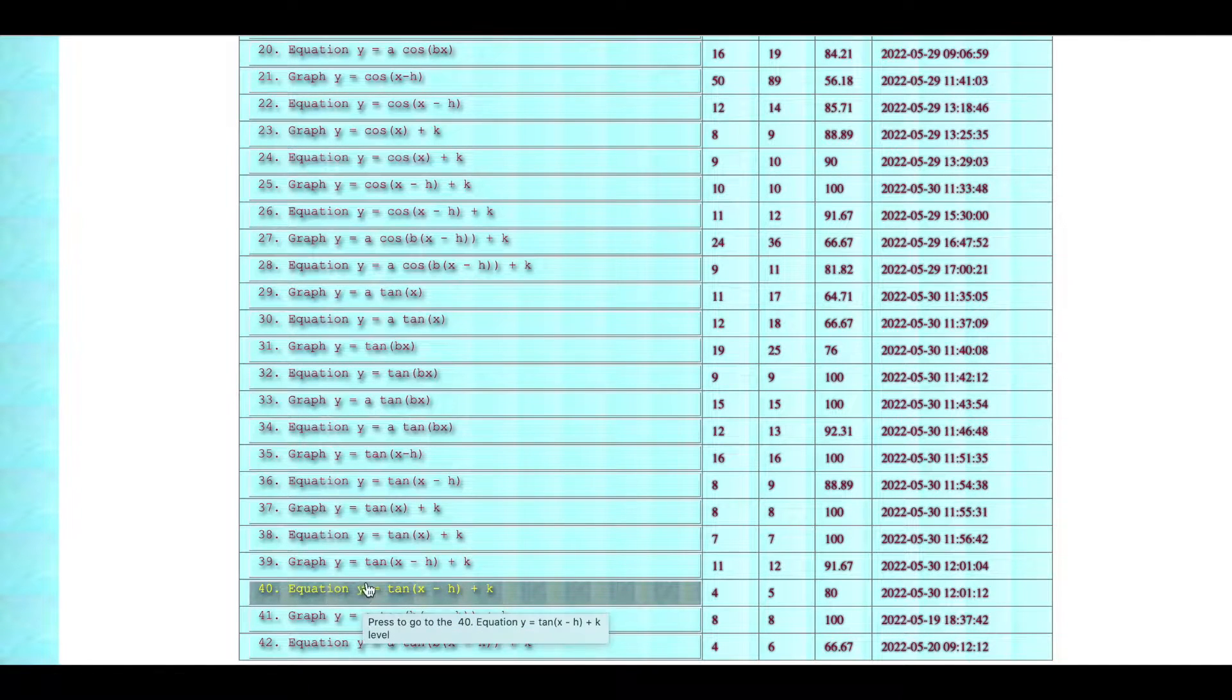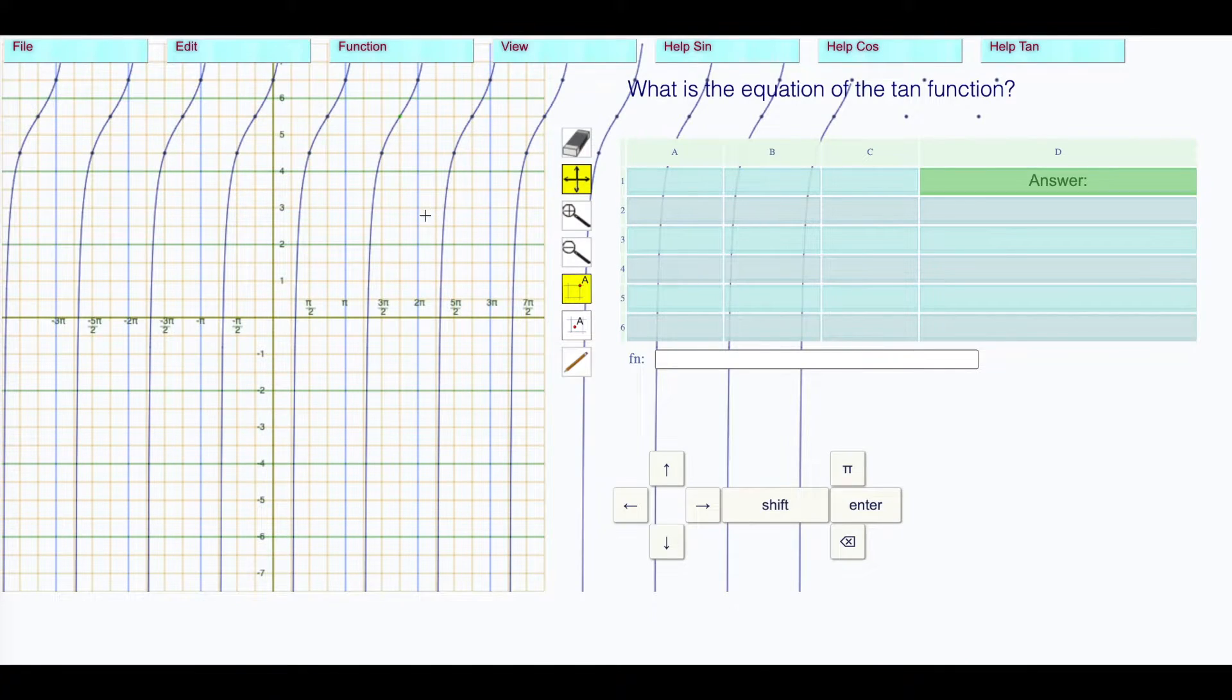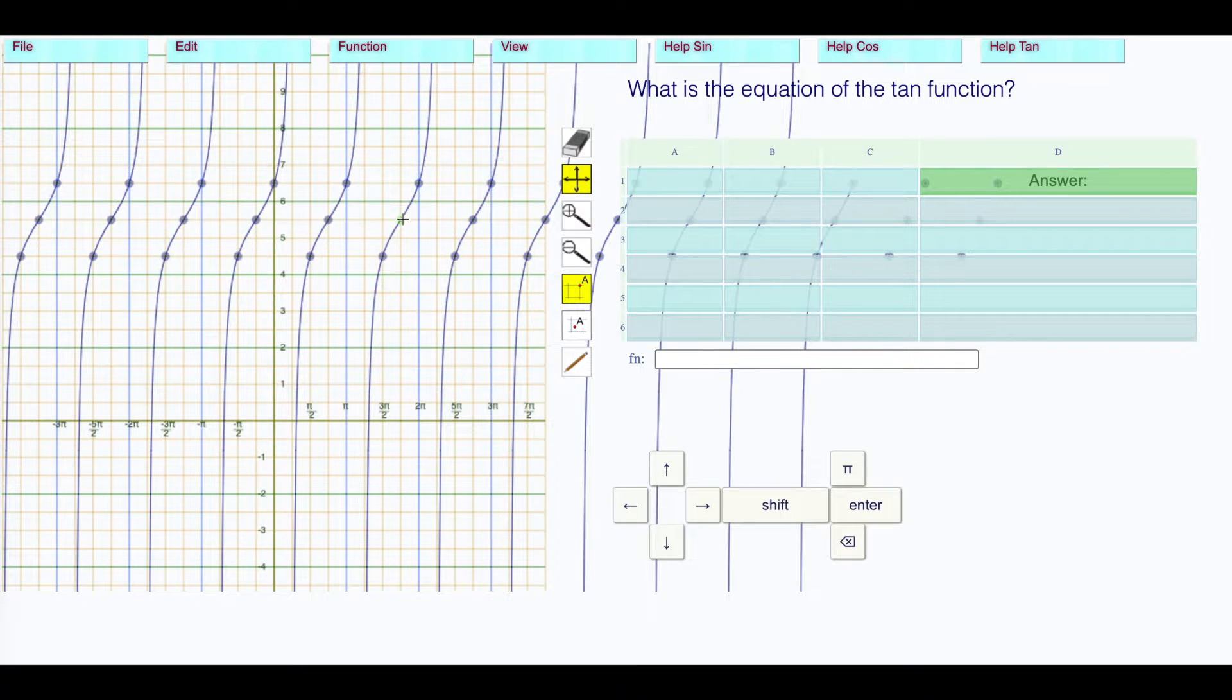For level 40, we want to find the equation y equals tan of x minus h plus k. We're interested in the horizontal and vertical translations. Looking at the horizontal translation first, the green glowing vertex has been dragged forward by 7π/4. So y equals tangent of x minus 7π/4. Then everything's been translated up 5.5, plus 5.5, and there's your answer.